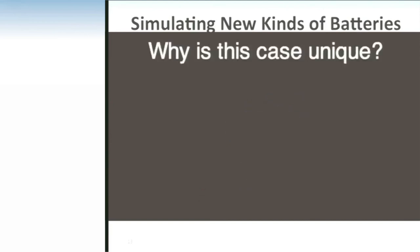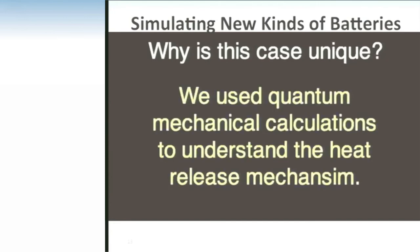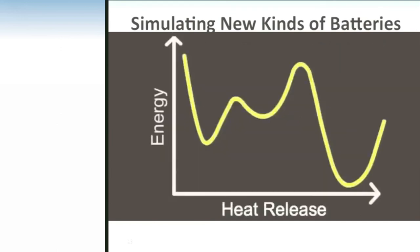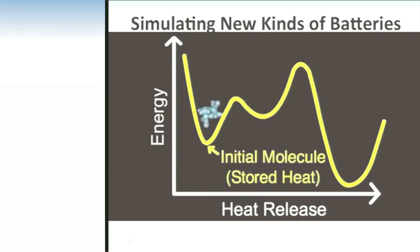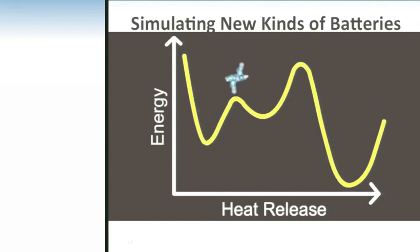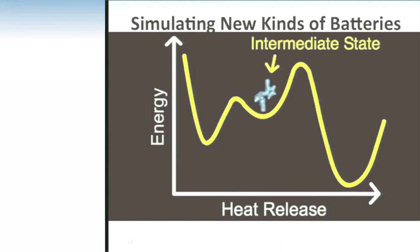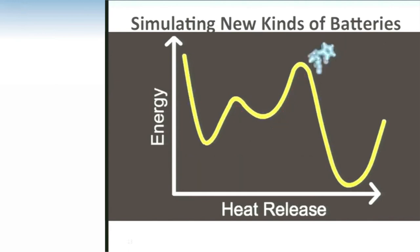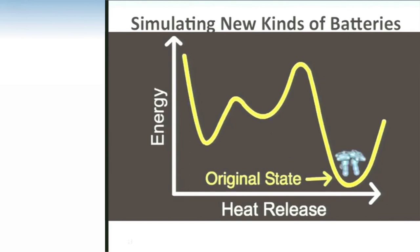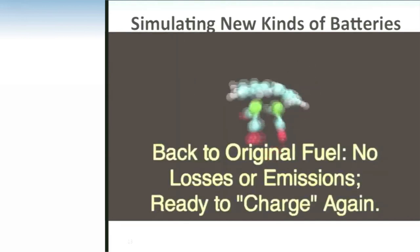The researchers wanted to understand why this particular molecule is unique — why it's so stable and does not degrade over time unlike other molecules previously tried. Quantum mechanical calculations were carried out to understand the heat release mechanism. Surprisingly, the molecule was thought to have only a single barrier along the reaction pathway, but the calculations revealed an intermediate state, meaning there are two barriers instead of one. The relative barrier heights along this path play a crucial role in the molecule's functionality. Using this knowledge, they are now working to develop further improvements, including cheaper materials and increased storage densities.